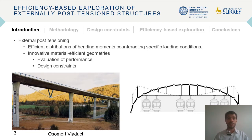External post-tensioning allows obtaining more efficient distributions of bending moments, for instance, by introducing intermediate supports in the structure, as shown on the image on the left. It also allows exploring innovative geometries. These require an evaluation of their performance and they need to be compatible with usual design constraints, as shown on the figure on the right.